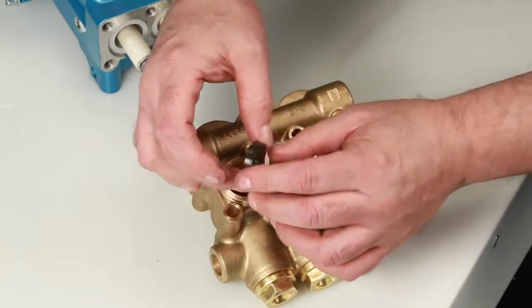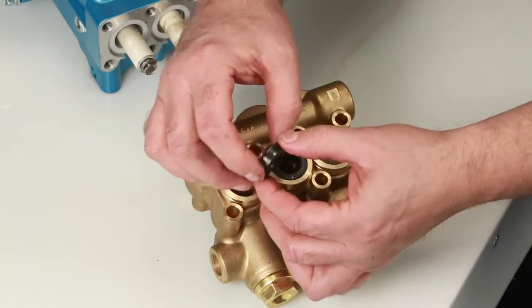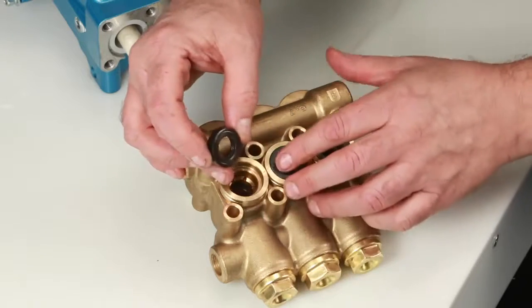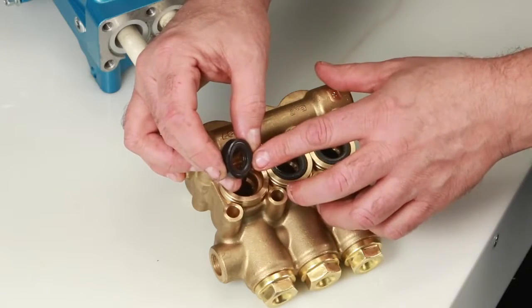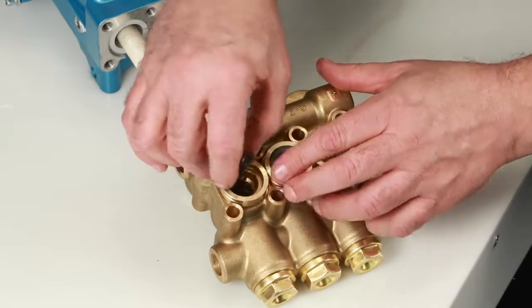Install the low pressure seal. The low pressure seal contains a spring on one side. Install with the spring side facing down and press into place.